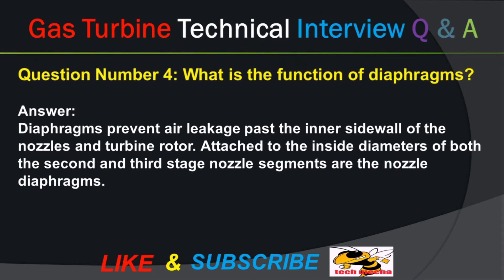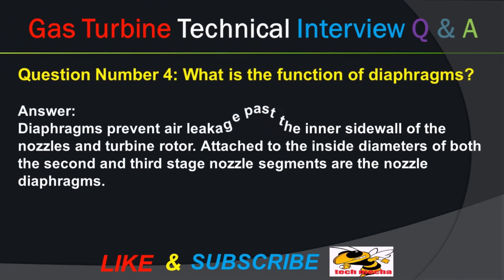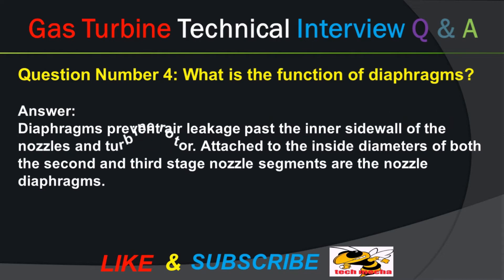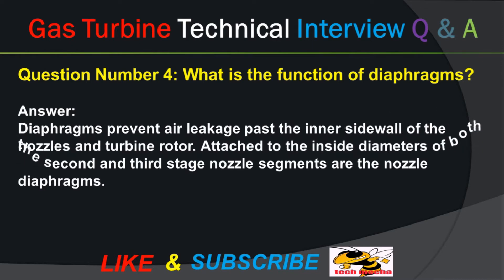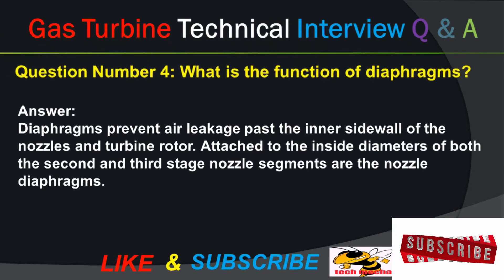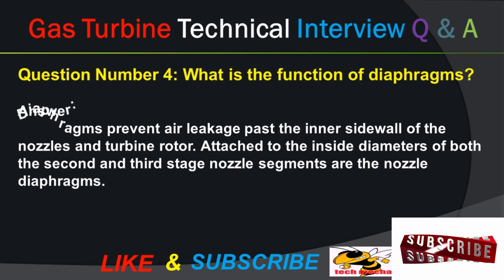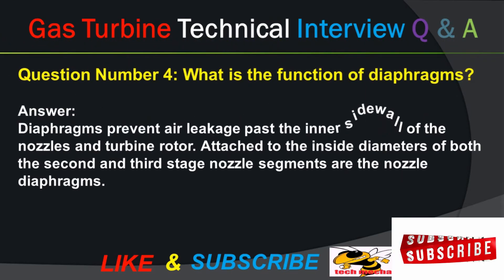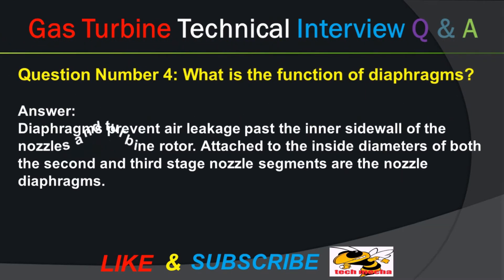Question number four: what is the function of diaphragms? Answer: diaphragms prevent air leakage past the inner sidewall of the nozzles and turbine rotor. Attached to the inside diameters of both the second and third stage nozzle segments are the nozzle diaphragms.